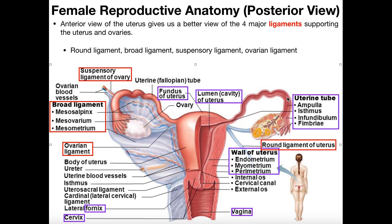Sort of like when we looked at the stomach anatomy in the digestive system, we saw that there were different parts of the stomach, like the fundus, the cardiac region, the body, the pylorus, and so on. The second thing we're going to look at is the layers of the wall of the uterus — there are three layers. And then the third thing we're going to look at are the ligaments that are all over the female reproductive anatomy, which are designed to anchor the uterus and the fallopian tubes in place.